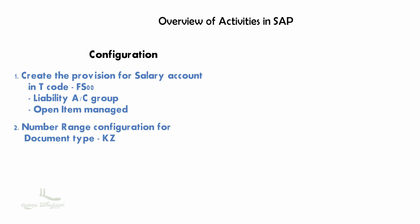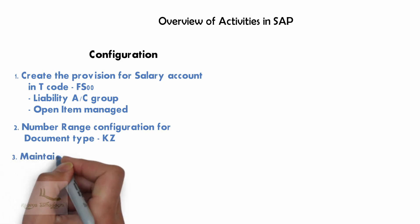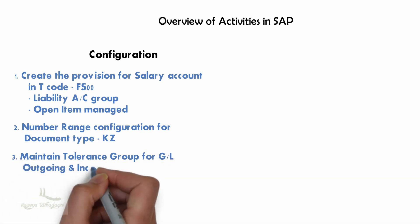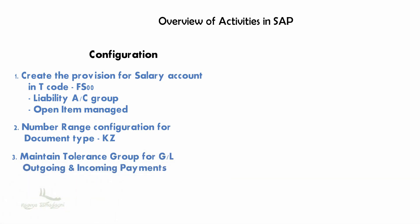After creating the number range, we will maintain the tolerance group for GL outgoing and incoming payments. This completes the configuration part. Then we will proceed to post the document as an end user.